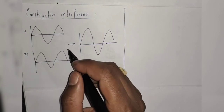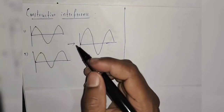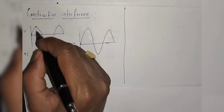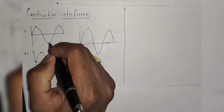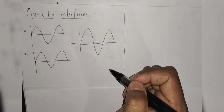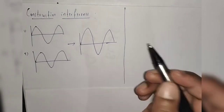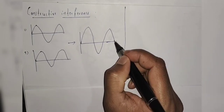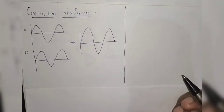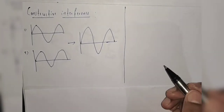In constructive interference, the crest point or the trough point should line up together. Then the resulting wave has higher amplitude as compared to the individual waves.